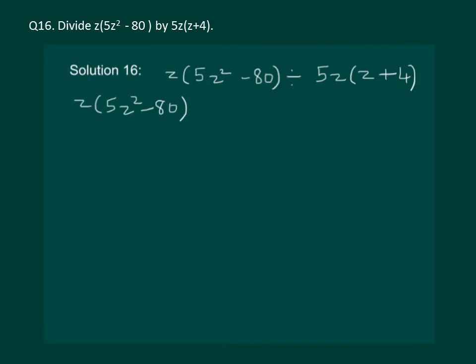We can see that from the numerator we can take out 5 common. So let us start with z into 5 and we are left with z square minus 16.